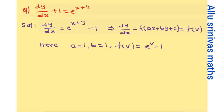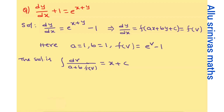f of v equals e to the power v minus 1. As before, we follow the same model. So f of v equals e to the power v minus 1. The solution is the integral of dv by (a plus b·f(v)) equals x plus c. A value is 1 and b value is 1.